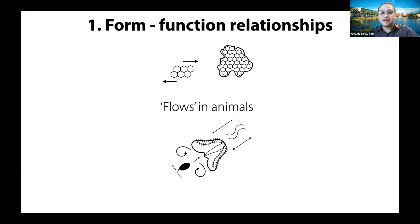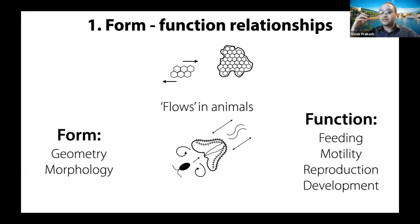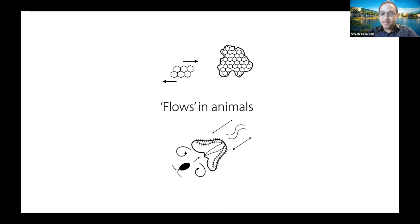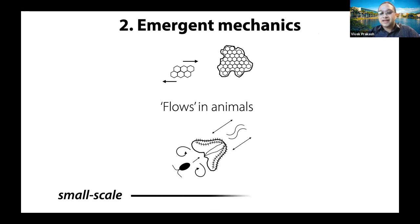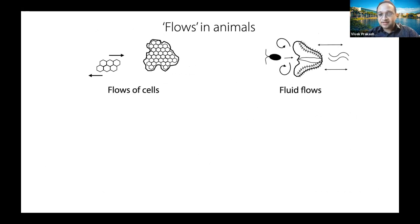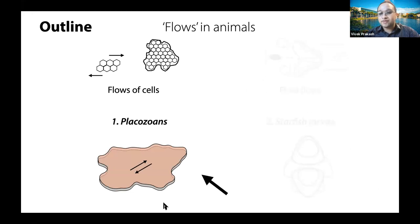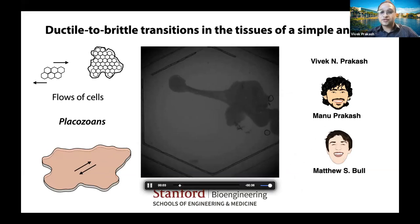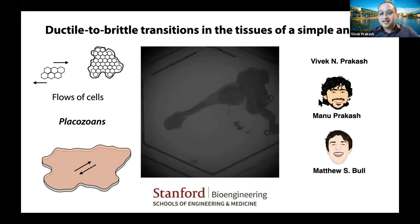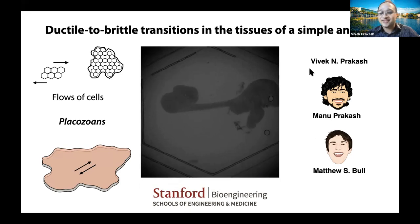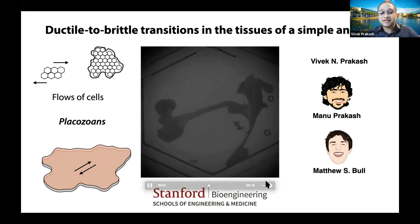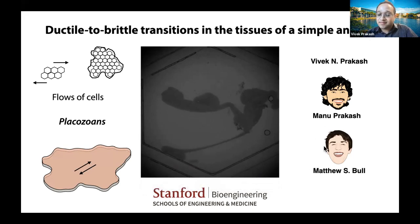The kinds of questions I'm interested in are form-function relationships: how does the form of an animal — its geometry or morphology — give rise to its functional behavior, whether that's feeding, motility, reproduction, or development. Another big theme is emergent mechanics: how do phenomena at the smallest scale give rise to behavior at large scales? During my postdoc I worked in Manu Prakash's lab at Stanford — and just to clarify, we are not related, it's just a common Indian surname — in a huge collaboration with Matthew Bull, a fantastic grad student.